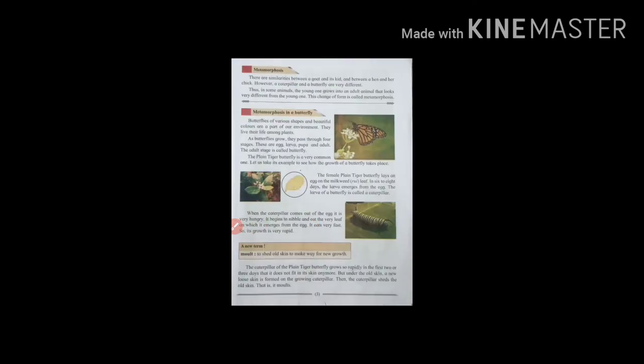Metamorphosis. There are similarities between a goat and its kid and between a hen and her chicks. However, caterpillar and butterfly are very different. In some animals, the young one grows into an adult animal that looks very different from the young one. This change of form is called metamorphosis.